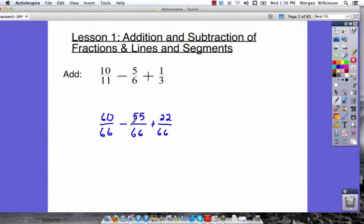Now we need to subtract first. So 60 minus 55 is going to give us 5 over 66. Then we're going to add our remaining 22 over 66 to come up with an answer of 27 over 66. Now when we've got our answer of 27 over 66, we need to think about if that can be reduced.